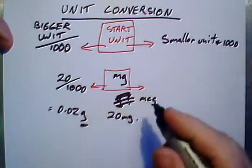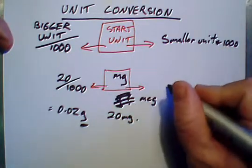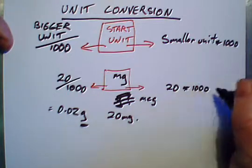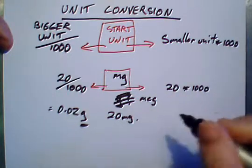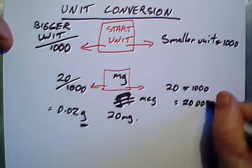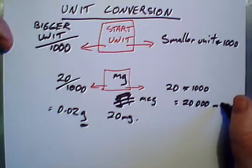So we end up with 20 times 1,000. So 20 milligrams equals 20,000 micrograms.